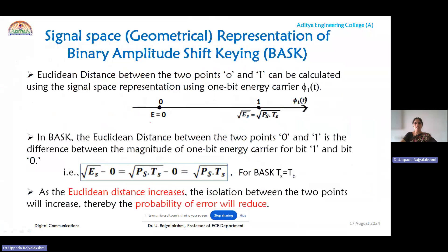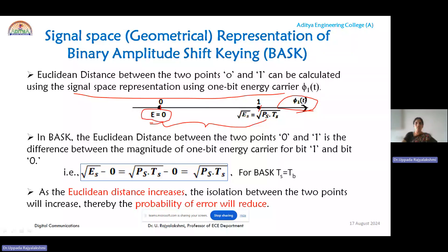In the signal space plot, the axis represents the one-bit energy carrier φ₁(t). The ASK signal is expressed as √Es · φ₁(t). To evaluate the Euclidean distance between the two points 0 and 1: for data bit 0 the energy is 0, and for data bit 1 the energy coordinate is √Es. Taking the difference: √Es − 0 = √(Ps × TS). Since for binary ASK, symbol duration equals bit duration, the Euclidean distance is √(Ps × TS).